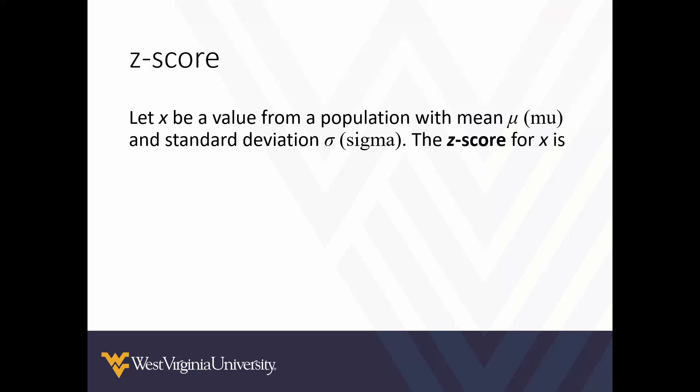We do this specifically with something called the z-score. Let x be a value from a population with mean mu and standard deviation sigma. The z-score is z equals x minus mu divided by sigma, where mu is the population mean and sigma is the population standard deviation.